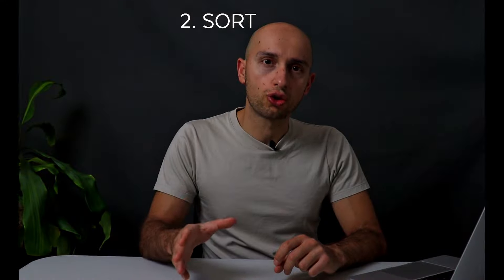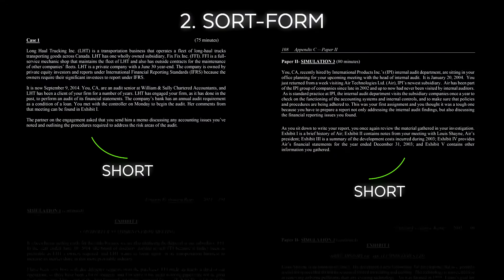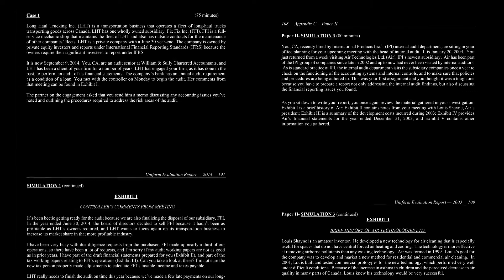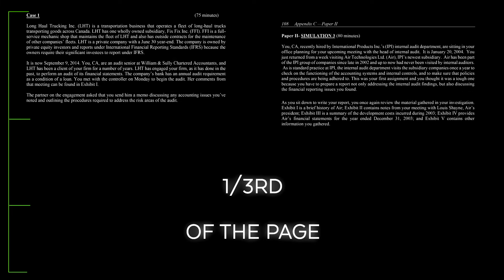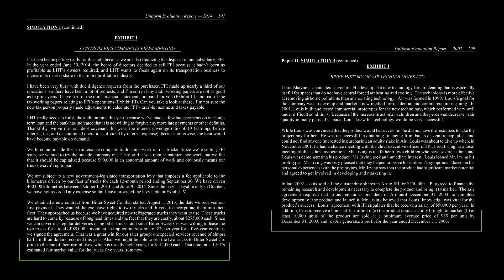The second style is short form. This is when the narrative is very short and one of the appendices gives you the background and required. In this example, the narrative is just one third of the page and the first appendix gives you most of the background information and the AOs.